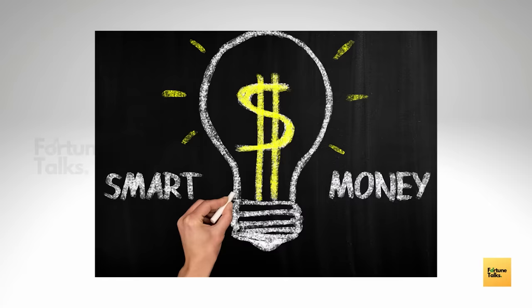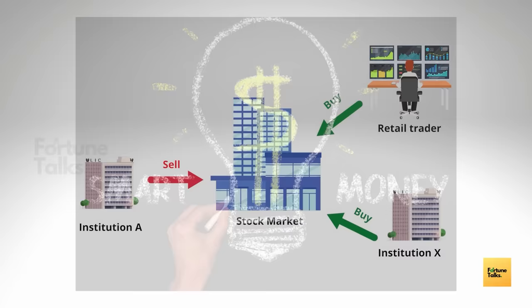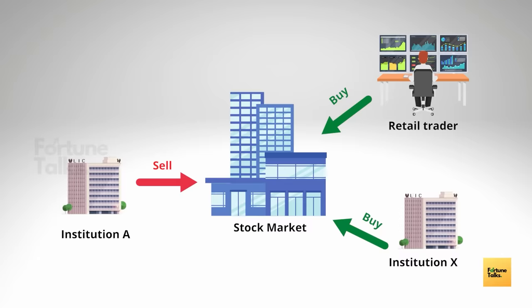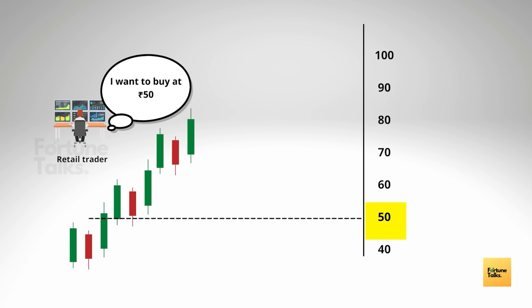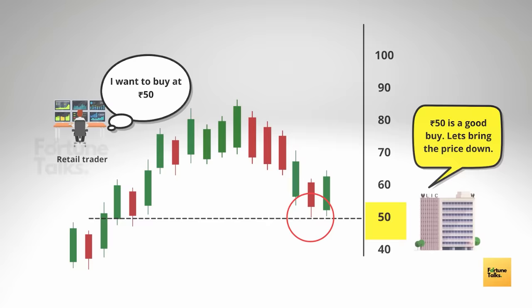Institutions are generally considered to be the smart money — they're smart enough to make a living by trading and they trade very large volumes every day. No trade can take place without one institution willing to take one side of the trade and another willing to take the other side. The small volume trades made by retailers can only take place if an institution is willing to take the same trade. If you want to buy at a certain price, the market will not get to that price unless one or more institutions also want to buy at that price.